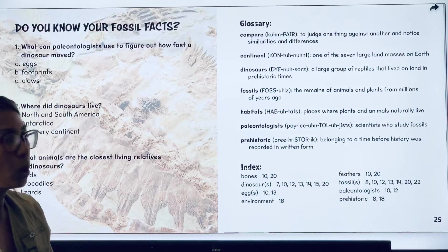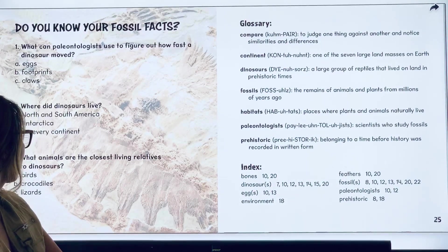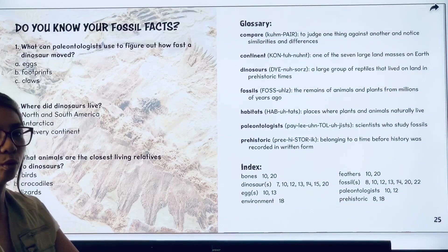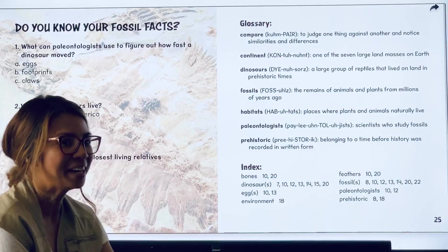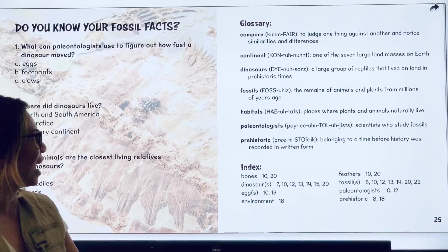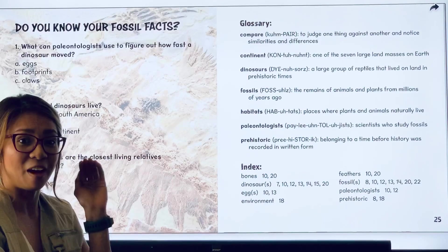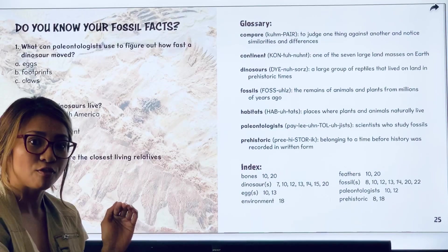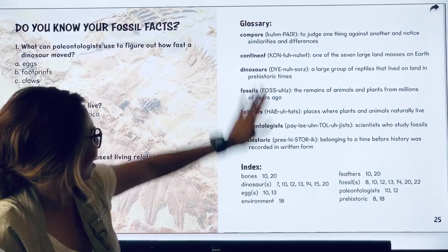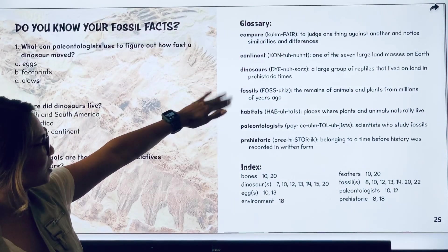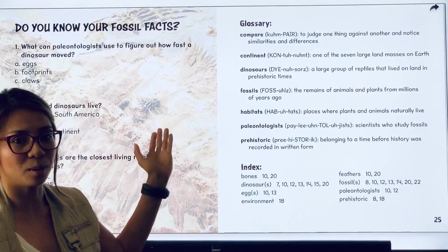Last question: What animals are the closest living relatives to dinosaurs — birds, crocodiles, or lizards? If you said birds, you're correct, because it did say that that velociraptor looked very similar to a roadrunner. Good job, guys. Here's a glossary — it's a good tool to figure out what words mean, so you can always look back at it.